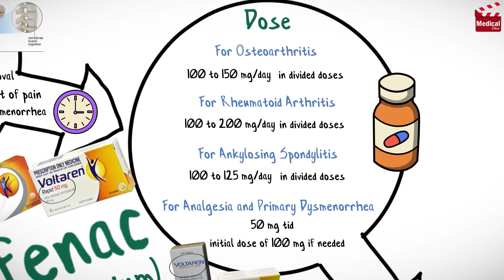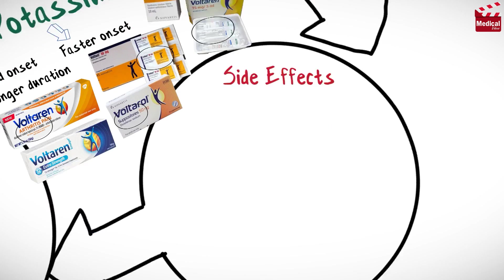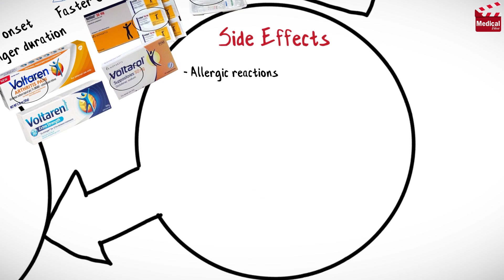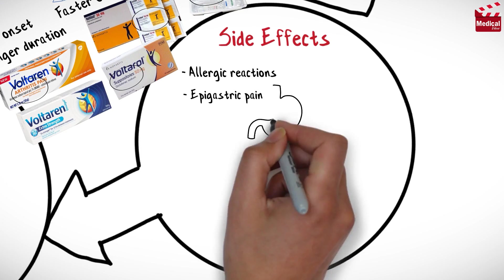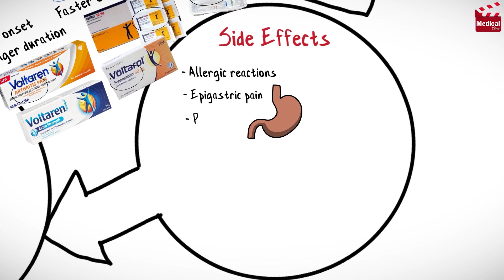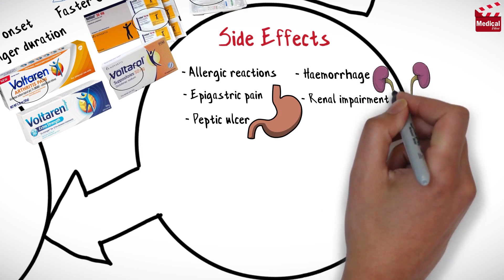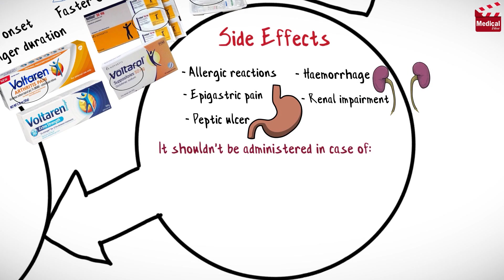For analgesia and primary dysmenorrhea, 50 milligrams of diclofenac potassium is used three times per day; an initial dose of 100 milligrams may be given if needed. Adverse effects include allergic reactions, epigastric pain, peptic ulcer, hemorrhage, and renal impairment.